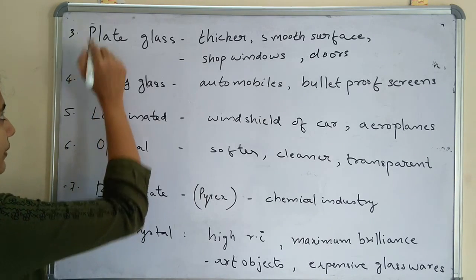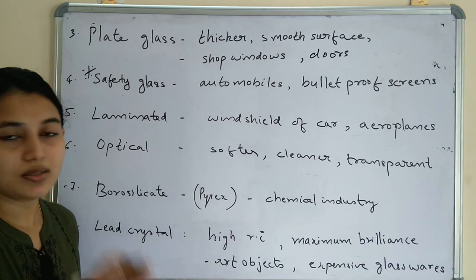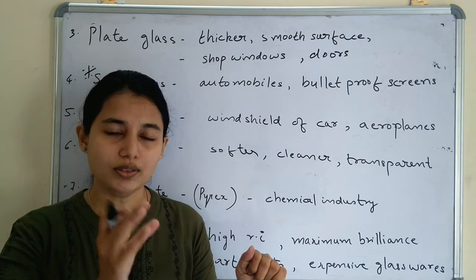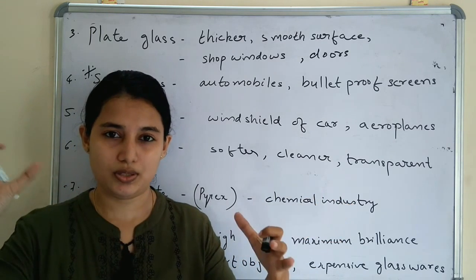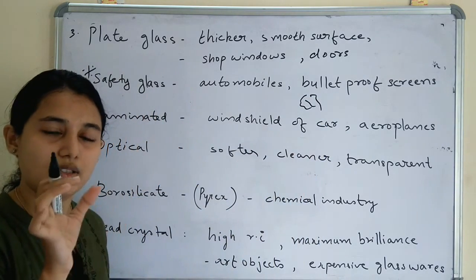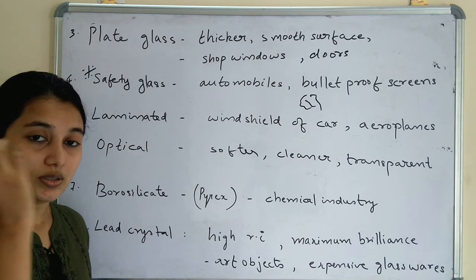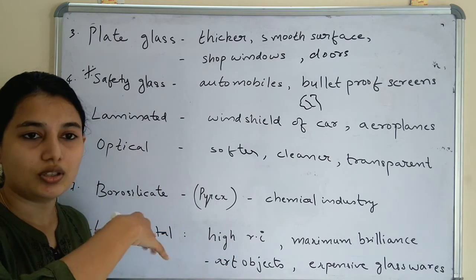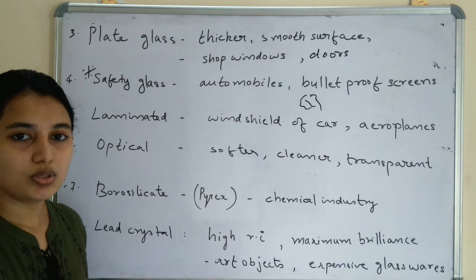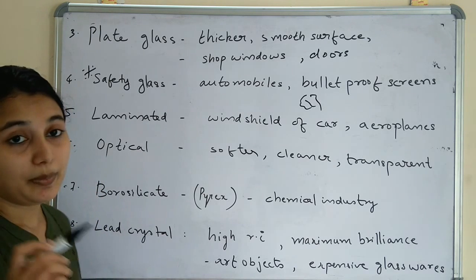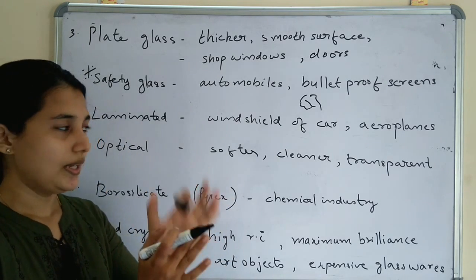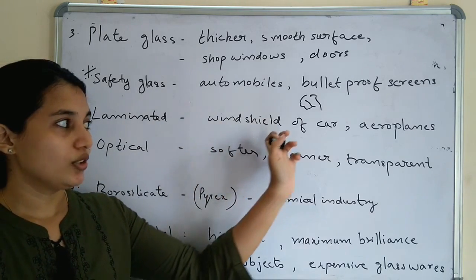The fourth type is safety glass, used in automobiles and bulletproof screens. In safety glass, if the glass is broken the pieces do not fly off — they remain held in place, with only cracks forming. The fifth type is laminated glass, which is a combination of several layers of safety glass bound together. It is used in windshields of cars, aeroplanes, etc.